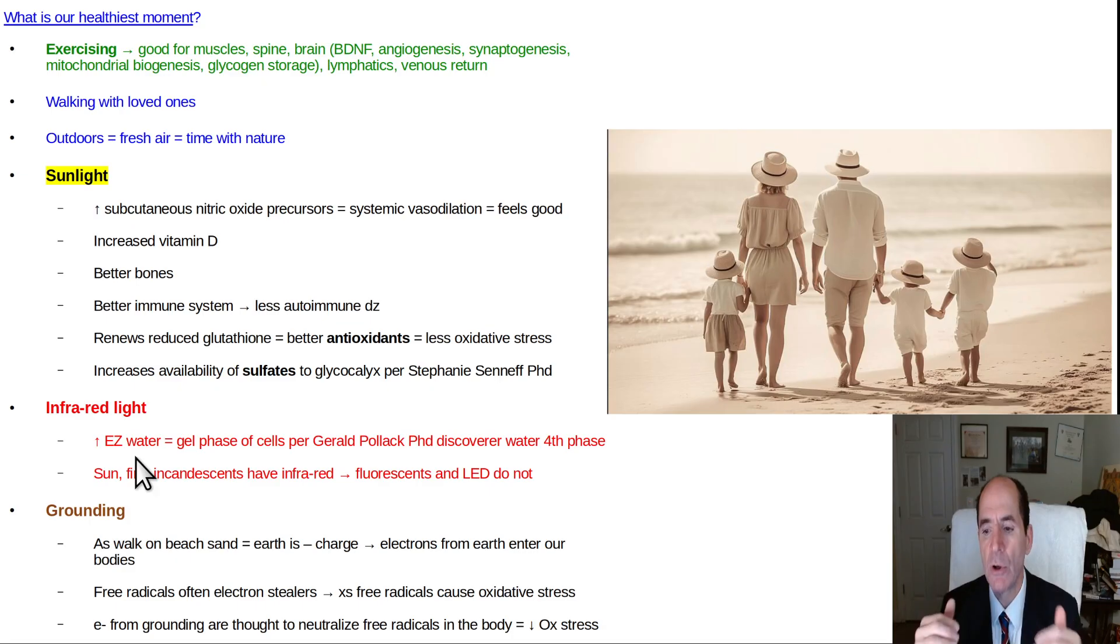EZ water means exclusion zone water. Water has four phases. A lot of people aren't aware of that. There's liquid water, water vapor, ice. That's three phases. But the fourth phase is like jello, almost a partially semi-crystalline structure of water. And that's the water in our body.